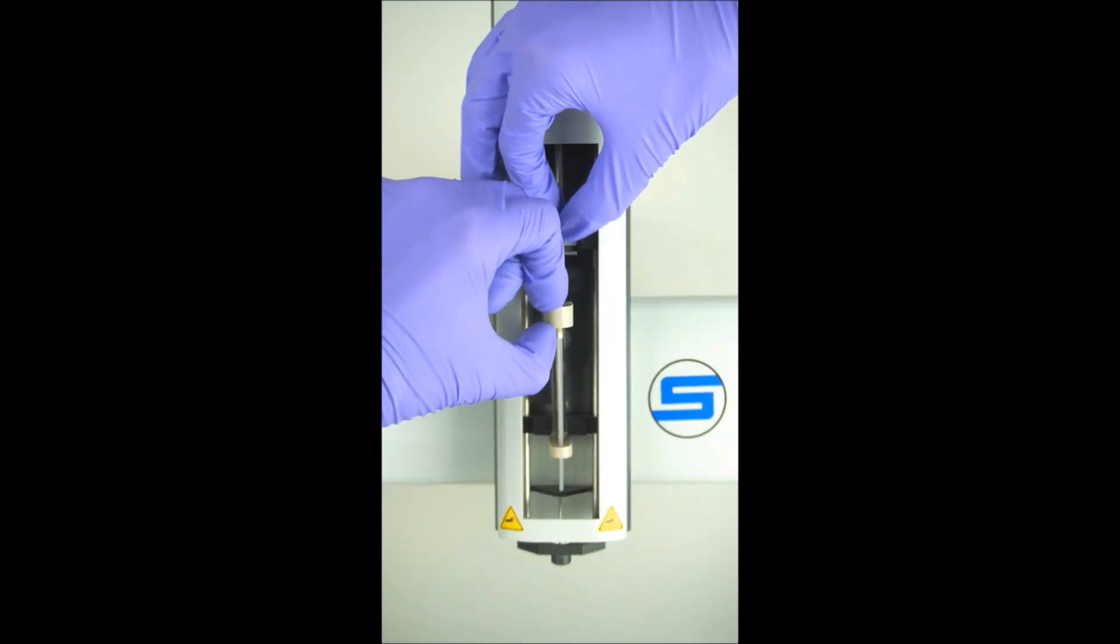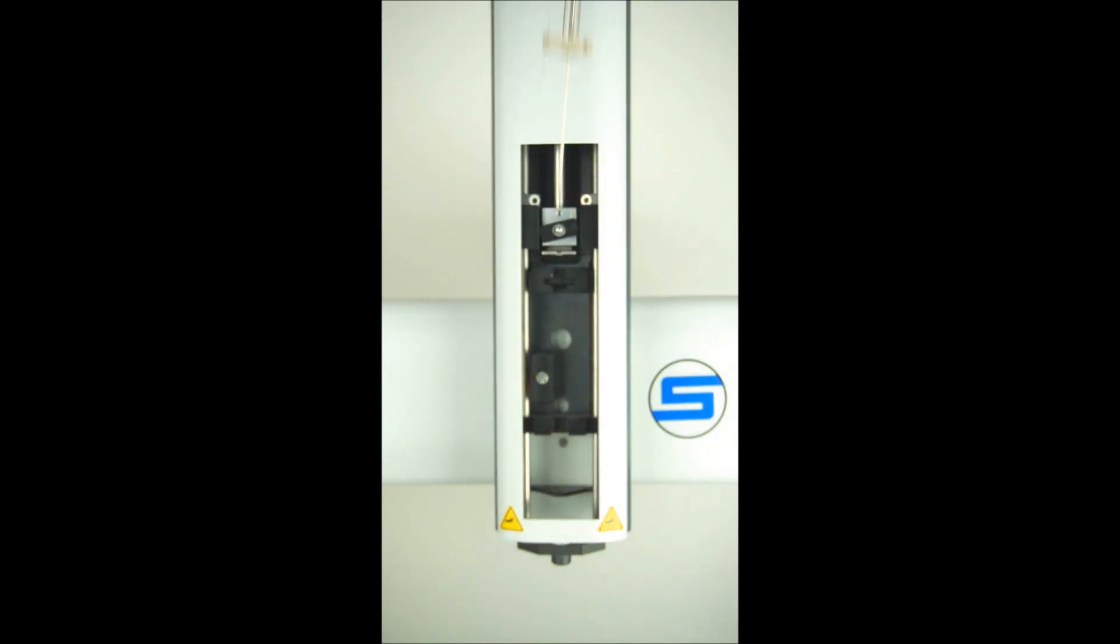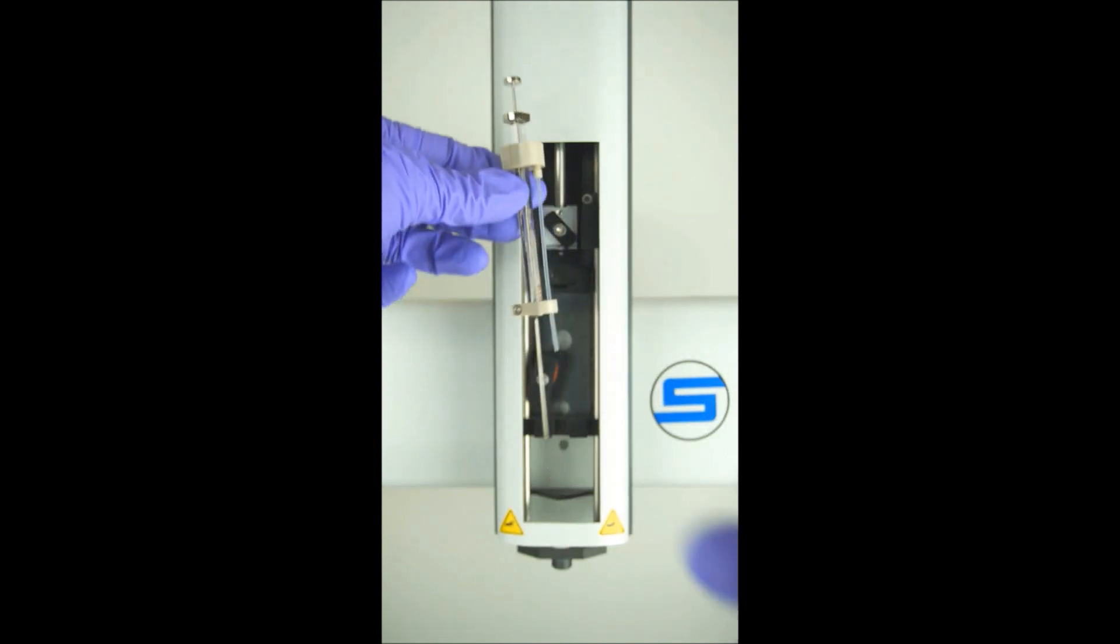While holding the clamp open, gently remove the syringe by grabbing onto the plastic upper syringe barrel housing. Turn it 90 degrees and remove it from the needle guide by pulling up.